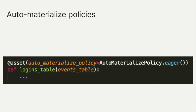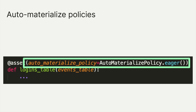Dagster lets you specify this by adding what it calls an auto-materialize policy to the asset definition itself. An auto-materialize policy essentially describes when we want to update a particular asset. The most common kind is what we call an eager auto-materialize policy, which basically means: update this asset whenever the upstream assets it depends on get updated. For assets generated as part of the Dagster pipeline, it's easy to know when they've changed because Dagster is the one changing them.